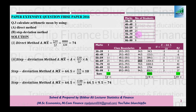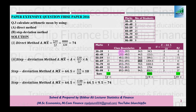Ek cheez yeh hai ke class boundaries nikalna chahein to good, agar nahi bhi nikalna chahein to zaruri nahi — arithmetic mean ke liye iski zarurat nahi hoti. Lekin phir bhi aap is ko habit banayein ke class boundaries zarur nikalein, kyunki agar median aur mode poocha jaye to kahin mistake ho sakti hai. Class boundaries ke liye dono ko minus karein, yani 40 minus 39 = 1, use 2 par divide karein aur result left side se minus aur right side par add karte jayein.